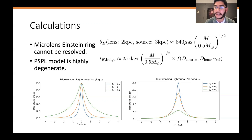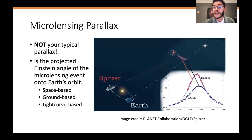This should be longer for events toward the plane, because the characteristic timescale depends on the distance of the source, distance to the lens, the mass of the lens, and the relative velocity between the two objects. This relative velocity is smaller for events viewed toward the galactic plane, so therefore the Einstein timescale should be longer.